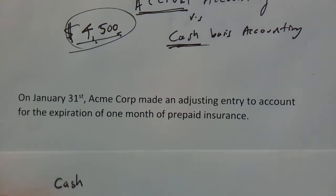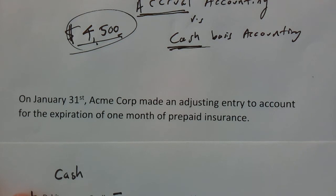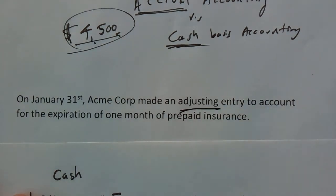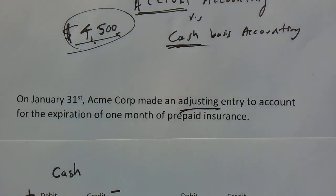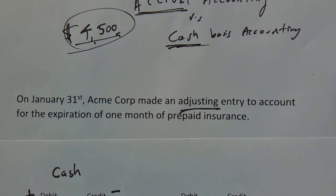So on January 31st, Acme Corp made an adjusting entry to account for the expiration of one month of prepaid insurance.